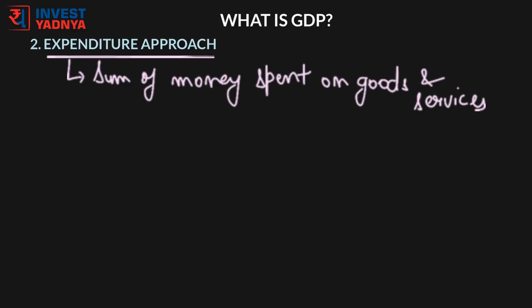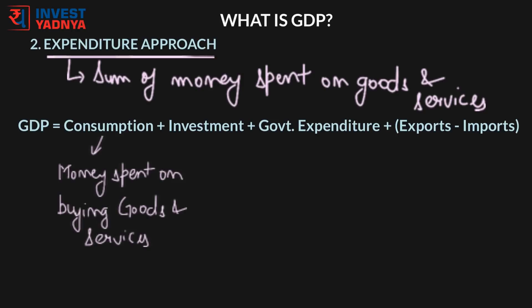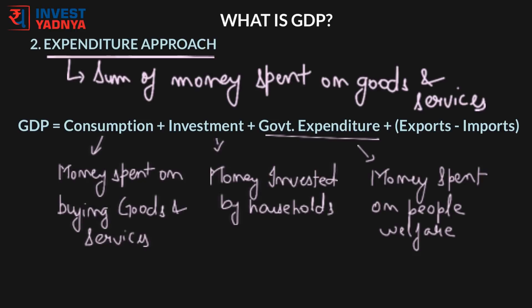Mathematically, GDP under this approach is calculated with this formula: GDP equals Consumption plus Investments plus Government Expenditure plus Exports minus Imports. Consumption includes things like food, gas bills, and cars. Investments include buying a house or investing in shares. Government expenditure includes things like constructing a bridge or a road. Exports are goods made in India and exported to Europe, for example a pair of shoes. Imports are products made abroad and brought into India, for example a dress made in Spain.